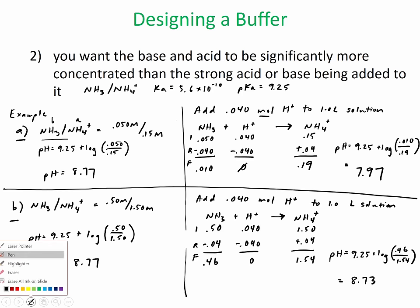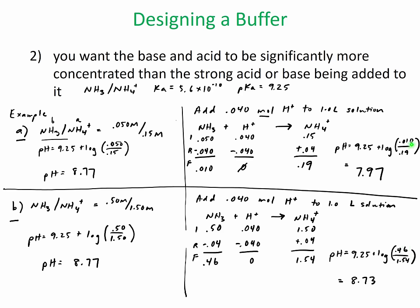In conclusion, solution A changed by a whole pH point — it got 10 times more acidic — while solution B barely changed. Here the 0.040 moles put a big dent in the ratio because, in comparison to the conjugate, it was pretty concentrated. But in solution B it was barely anything compared to what you started with, so it barely disrupted the ratio. Our buffer was able to resist pH change much better in solution B. That's the second condition: you want your buffer to be concentrated compared to the acid or base being added to it.